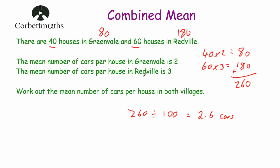Now some students often ask: can you not just add together the 2 and the 3 and divide by 2 — work out the mean of those two means? Well, if we look, there were 40 houses in Greenville and 60 houses in Redville. So it wouldn't have been fair to add them together and halve it, because there were more houses in Redville altogether. Let's have a look at our next question.